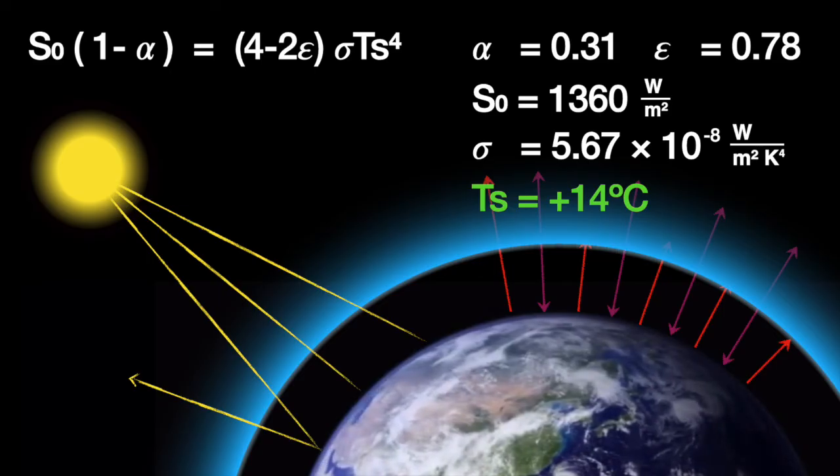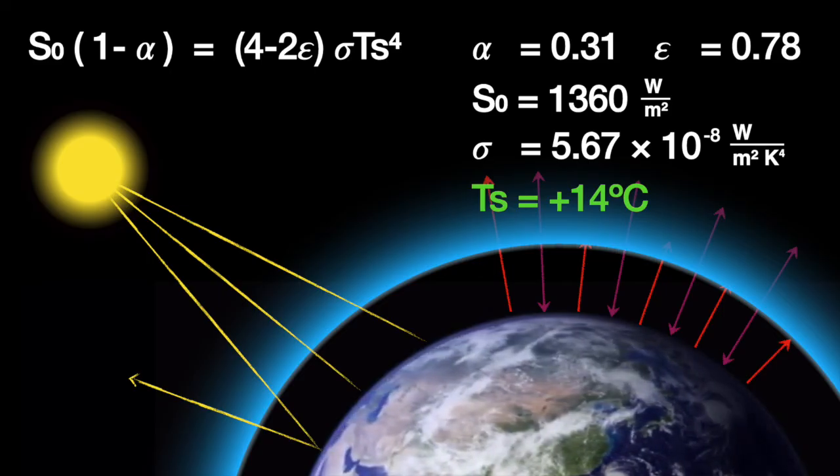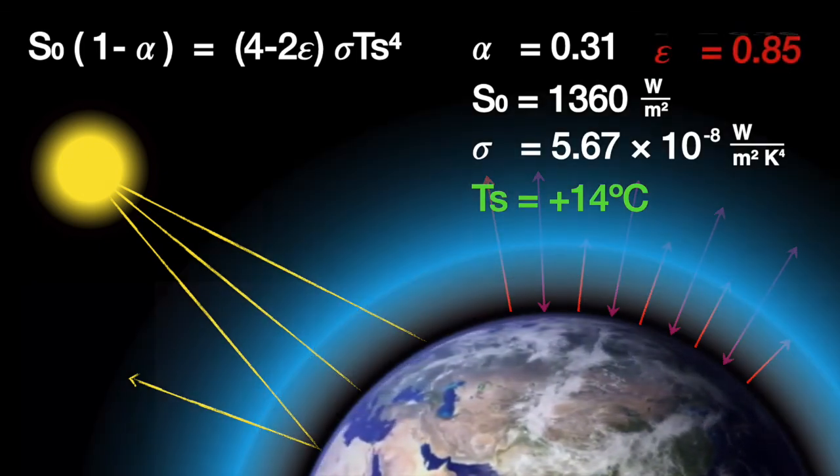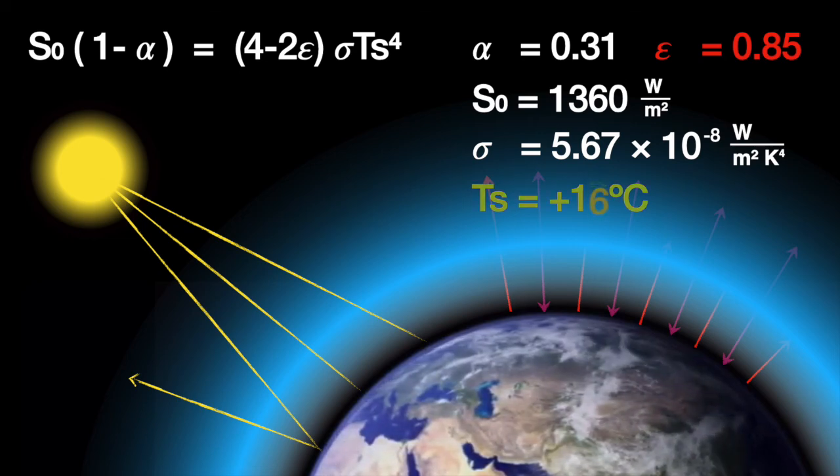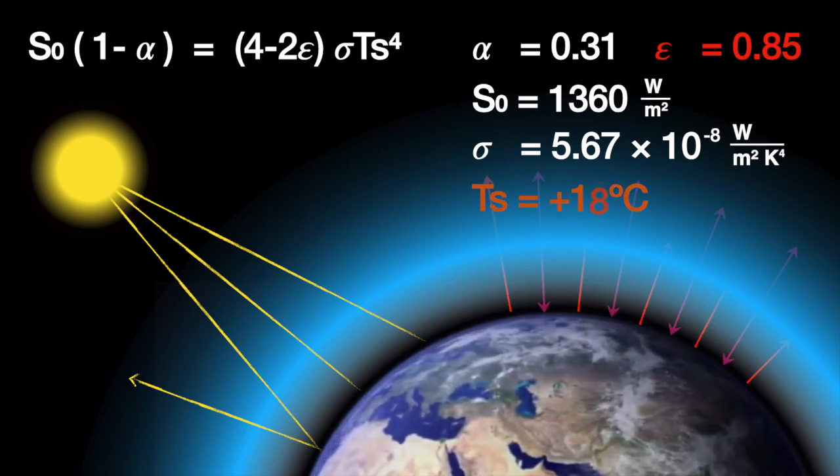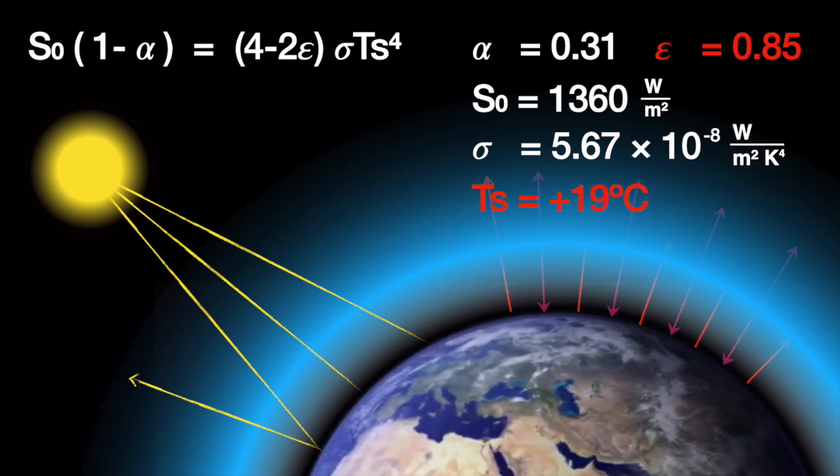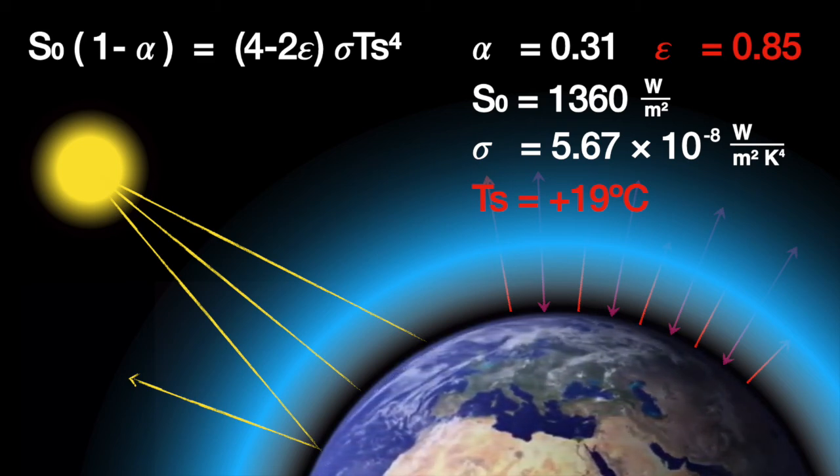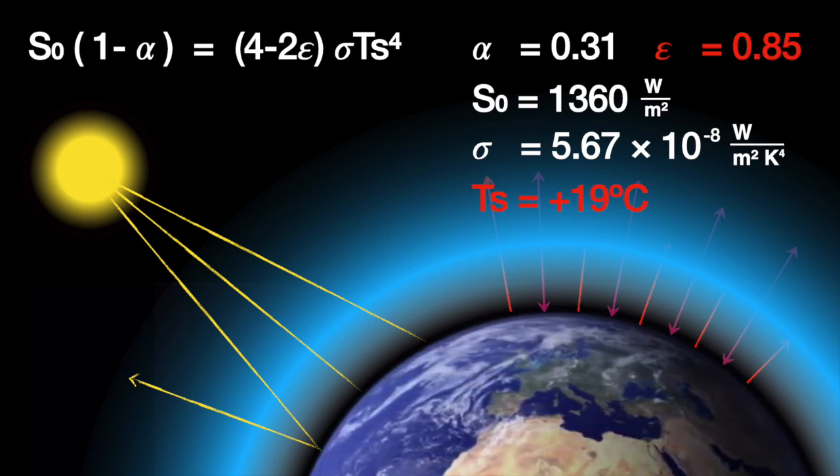And that tells us that the reason the planet is warming must be not because we're receiving more heat, it must be because we can't shed as much heat to space as we used to. Because that blanket of greenhouse gases around us has gotten a little bit thicker, and so we don't get as much chance to cool off at night.